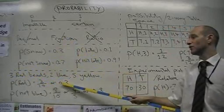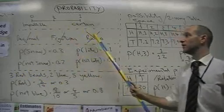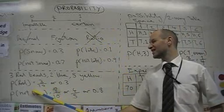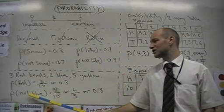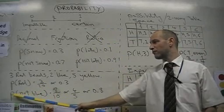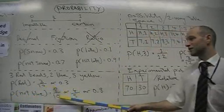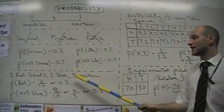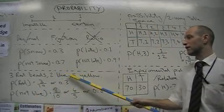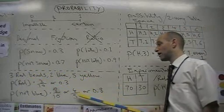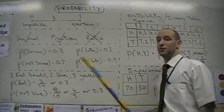We can write that as a fraction or as a decimal. Remember, not as a ratio. Similarly, the examiner might ask you a slightly more confusing question using the word not. The probability of not getting a blue bead is 8 out of 10, because there are 8 beads that are not blue, 5 yellow and 3 red, or we can write it as 4 out of 5, or 0.8 as a decimal.